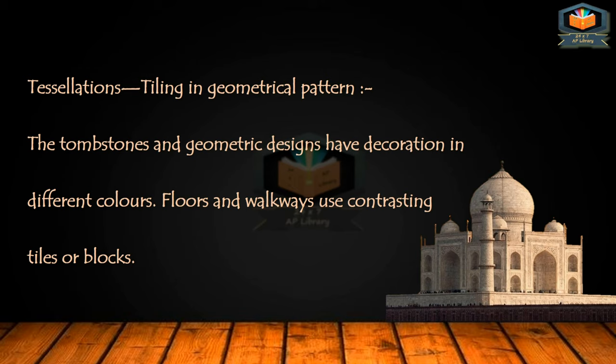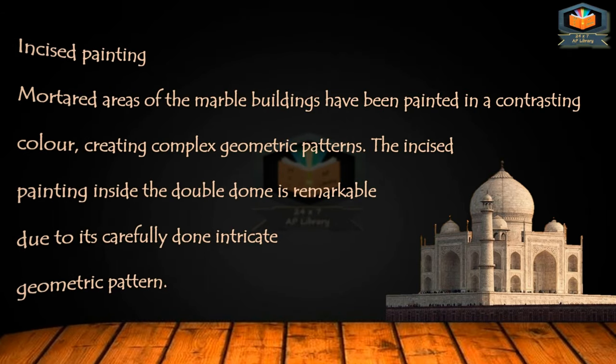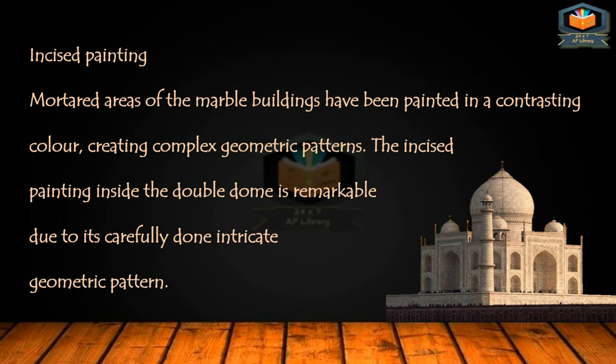Tessellations — tiling in geometrical pattern — are used; the tombstones and geometrical designs have decoration in different colors, and floors and walkways use contrasting tiles or blocks. Incised painting: mortared areas of the marble buildings have been painted in a contrasting color creating complex geometric patterns. The incised painting inside the double dome is remarkable due to its carefully done intricate geometric pattern.